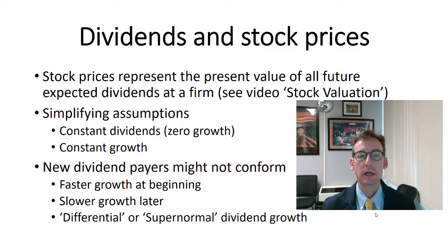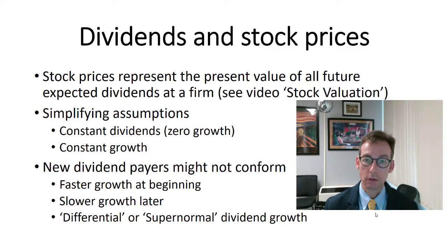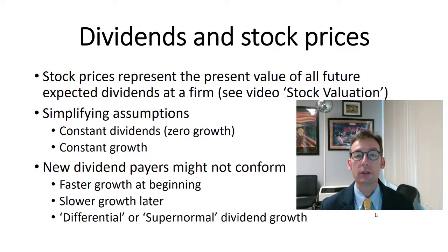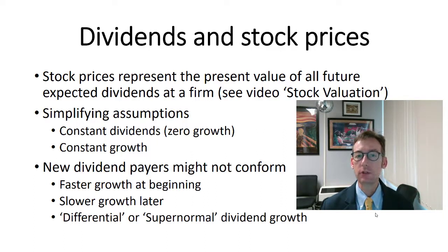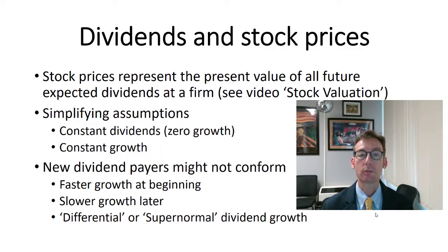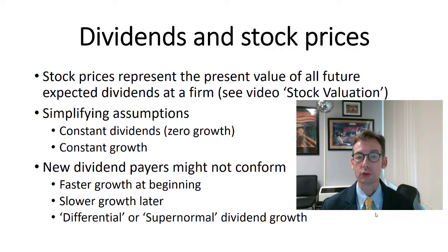We've got some simplifying assumptions that we make along the way. We could talk about constant dividends, which is also called zero growth dividends — and that would be how we value preferred stock. And then we've got constant dividend growth, where the dividends grow at a constant rate. Those two can be easily solved using a straight-up algebraic equation. But then there's a third way called differential or supernormal dividend growth. This is where the dividends grow quickly at first and then revert to a constant dividend growth rate for the rest of all time.